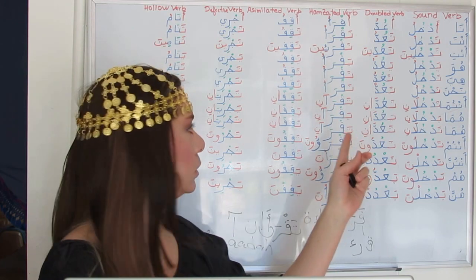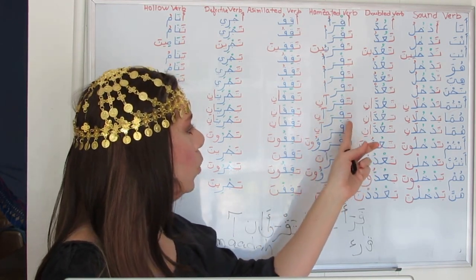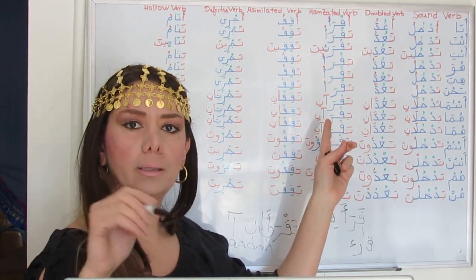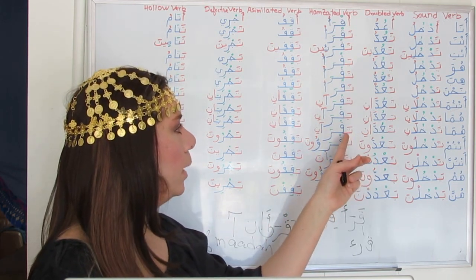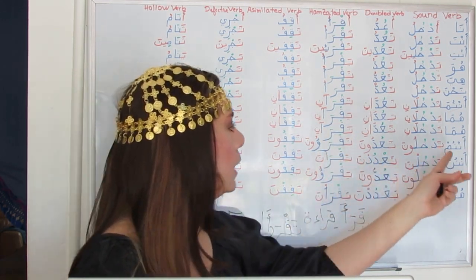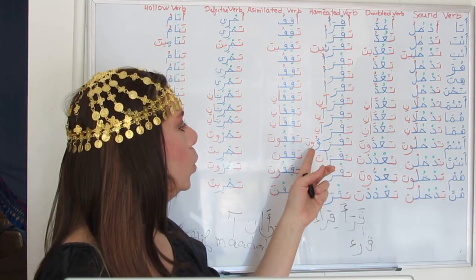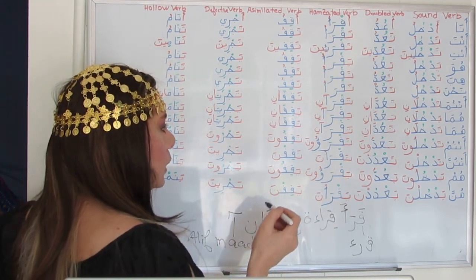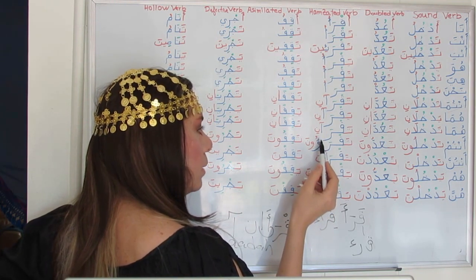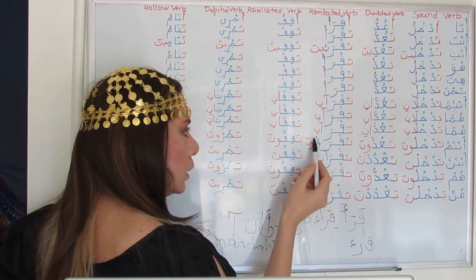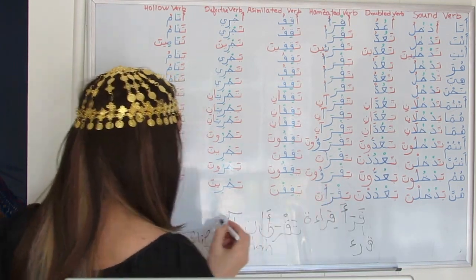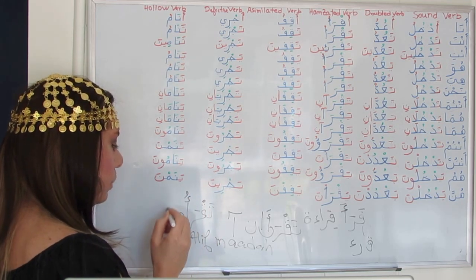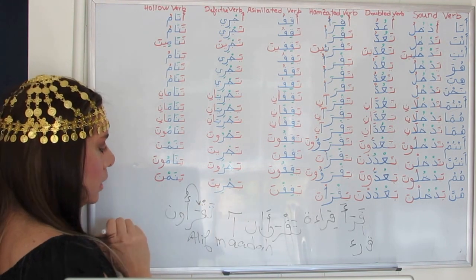Huma yaqra'ani — for the dual it will be the same, with Alif Maadda. Huma taqra'ani. Antum taqra'oona — here we can write it either with the Hamza on top of the Waw matching the Dhamma, or on Alif since it is preceded by Fathah. Either way is correct.